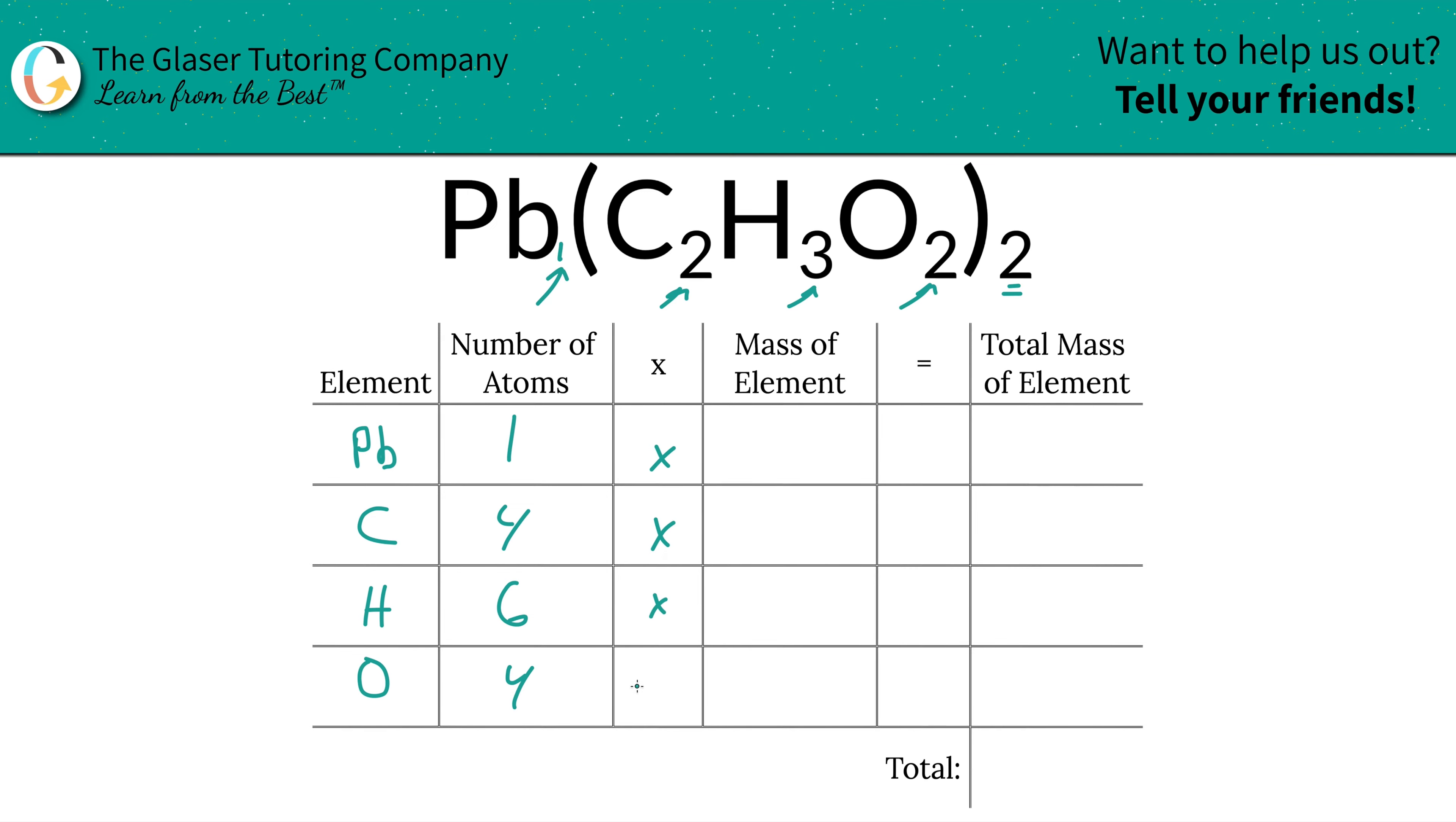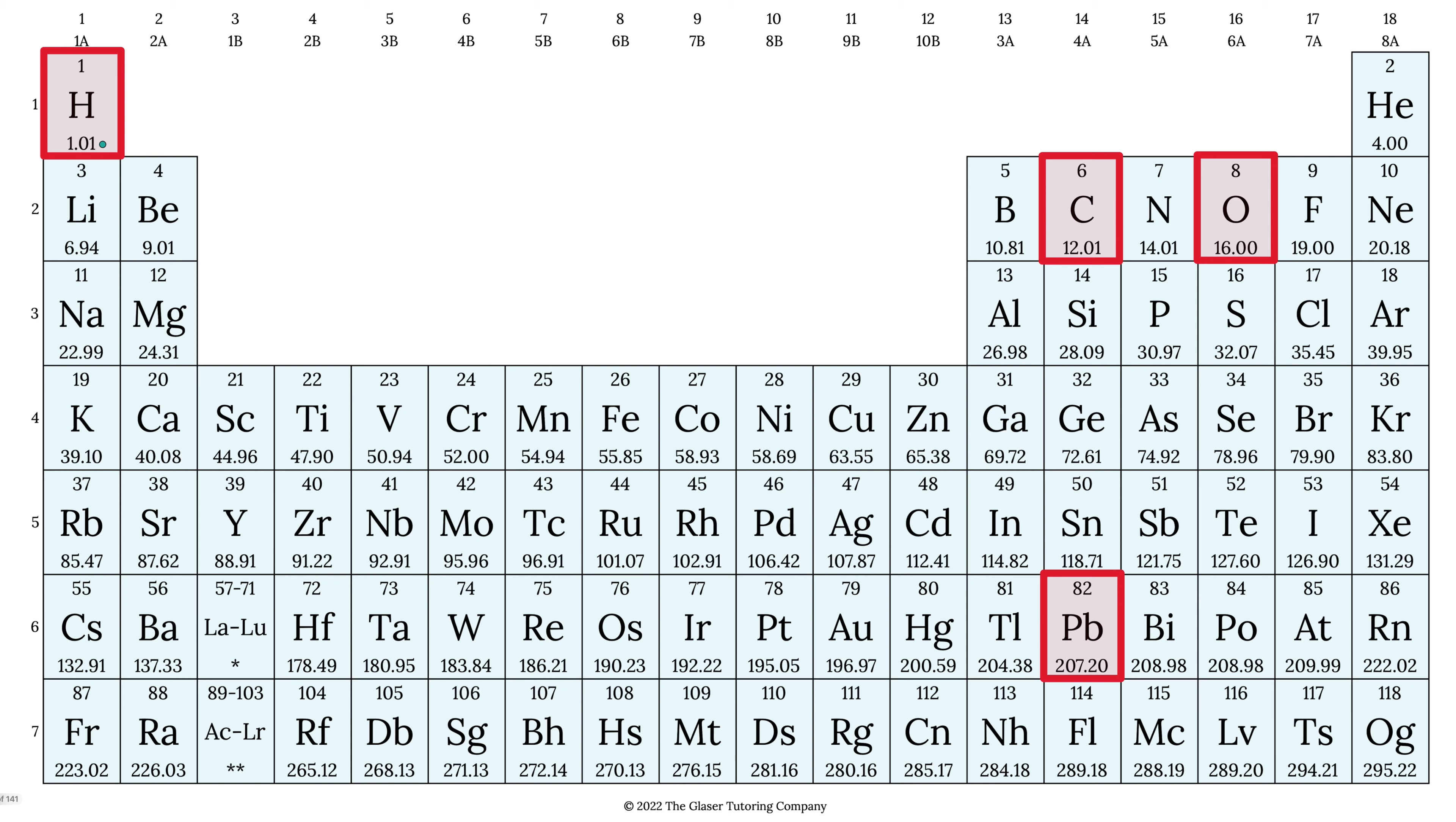So then we're going to take those number of atoms now, and we're going to multiply it by the mass of each element. You need a periodic table for this. Oh wait, look, there it is.